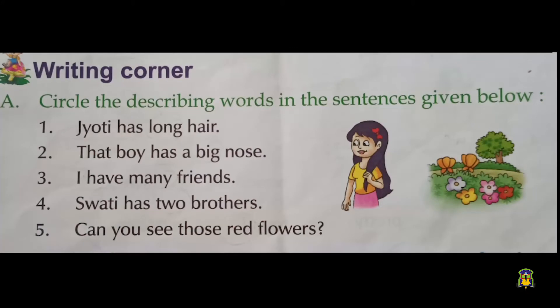Children, this is the time for textual activities. You have to take your English textbook page number 19. Then take a pencil. Let's start. The first activity: circle the describing words in the sentences given below.